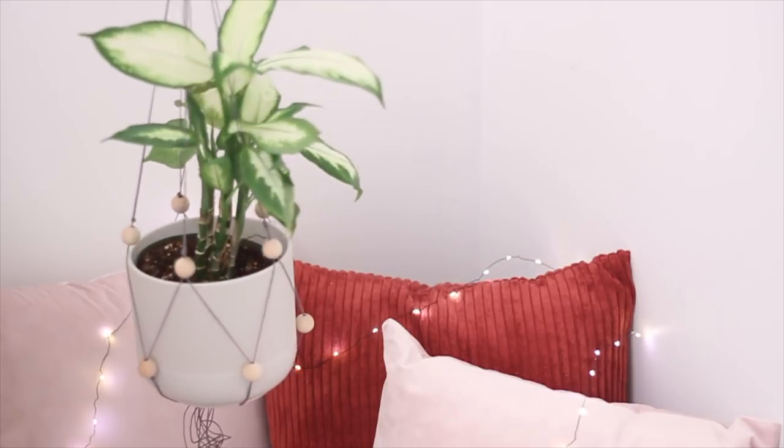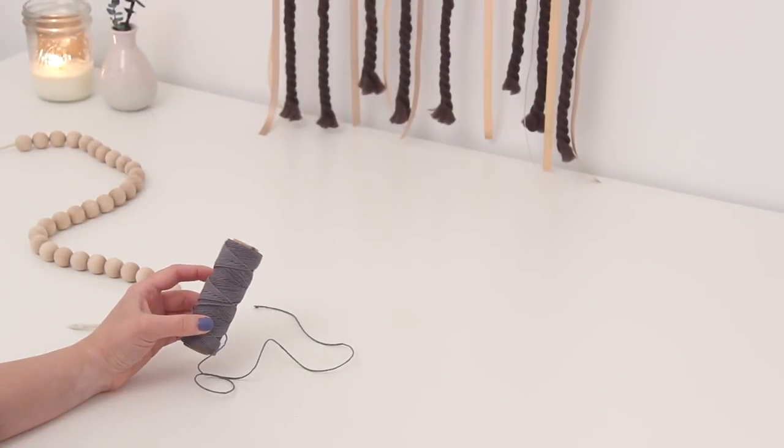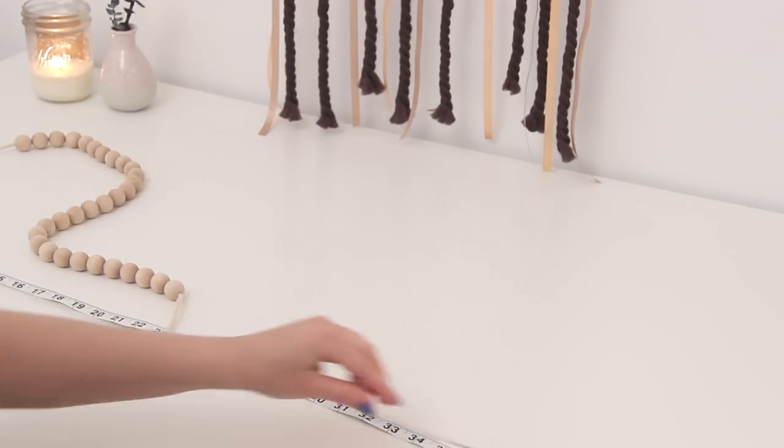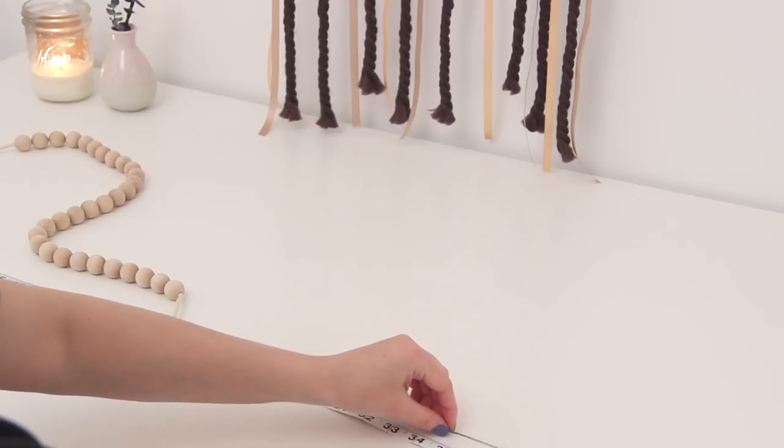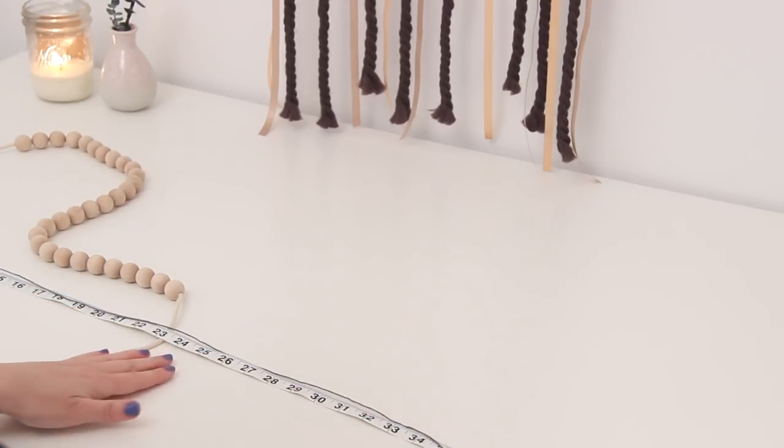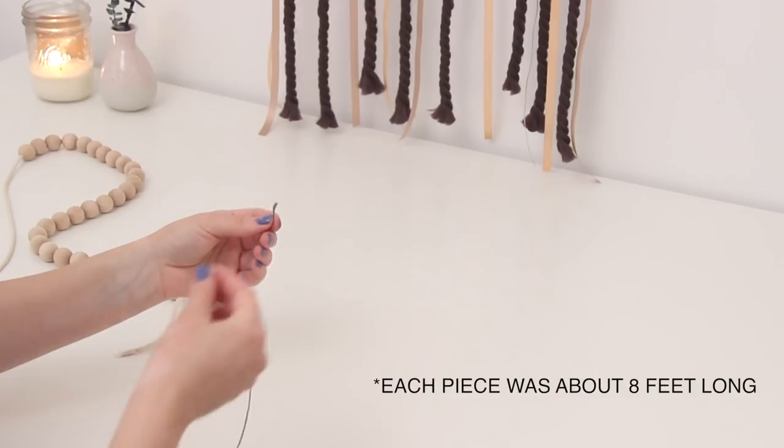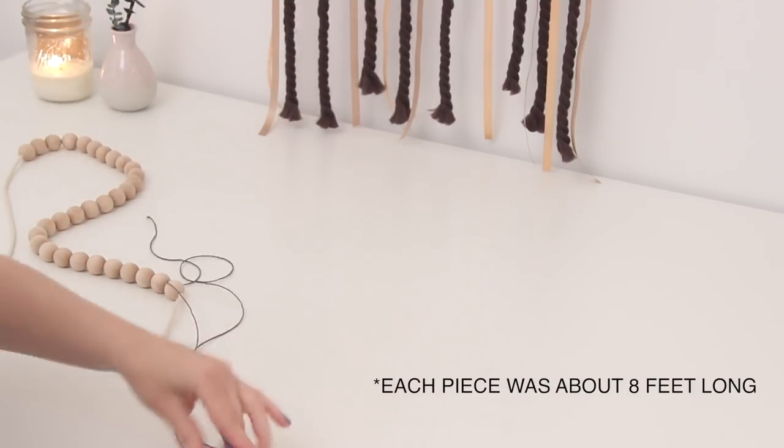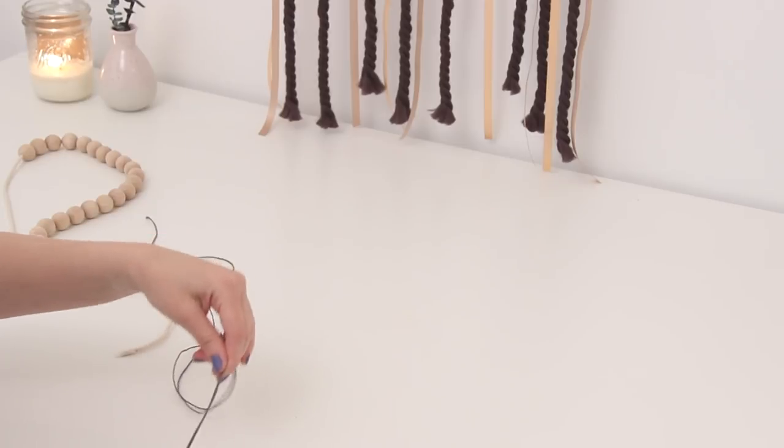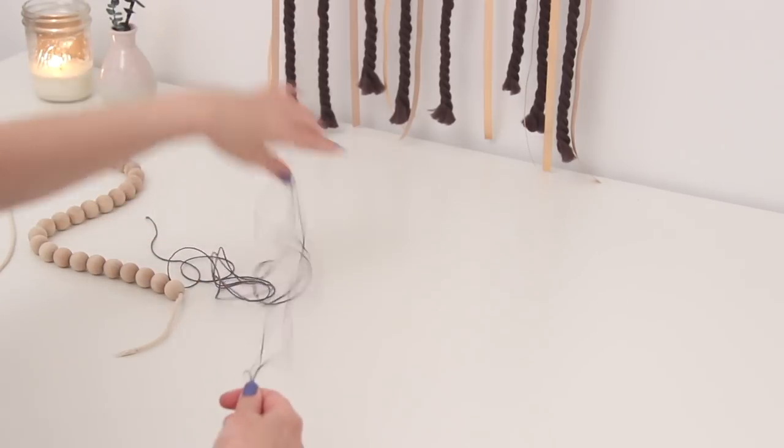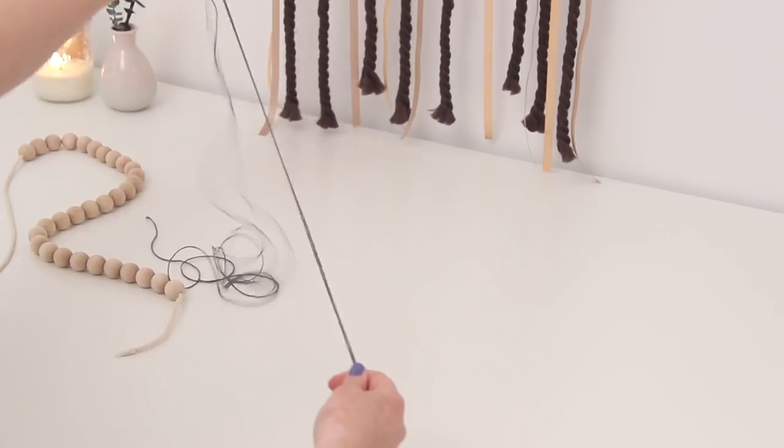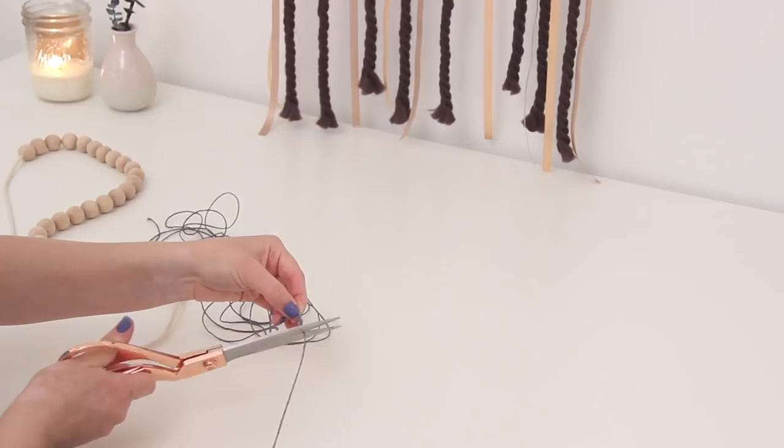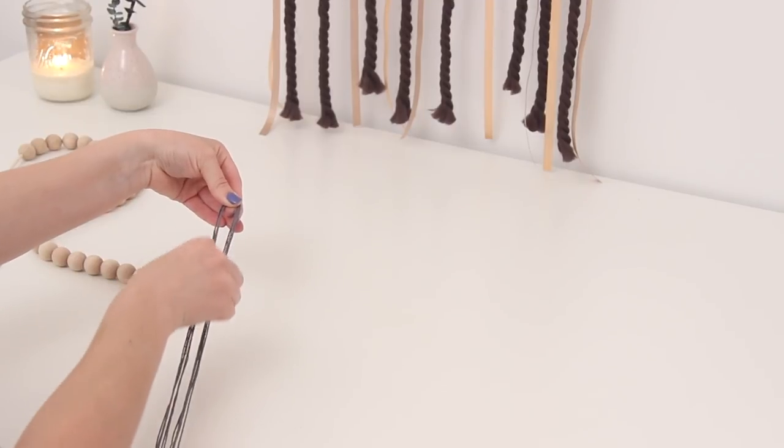This first one is kind of a beginner's take on macrame. You're going to need some string or rope. Measure out the length that you want it to hang from the ceiling and then double that. It'll depend on where you're hanging your planter. After you've cut one piece, make four other identical pieces for a total of five pieces. I used the first piece as a guide to cut out the rest.